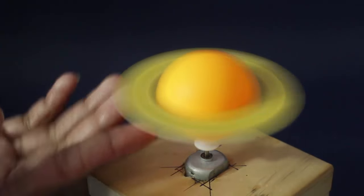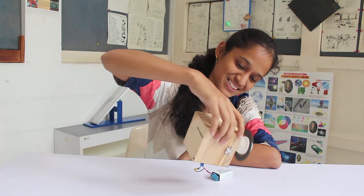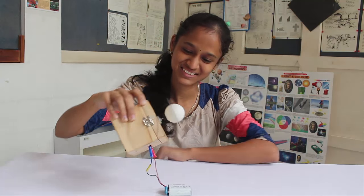Even if you invert the motor assembly, the card ring still keeps spinning and does not fall down. Isn't this amazing?